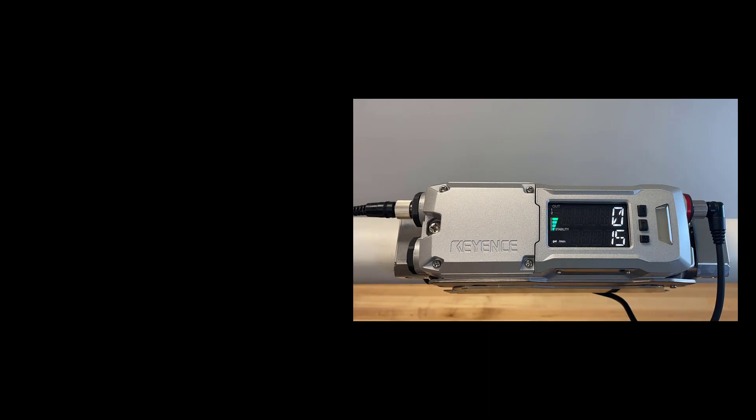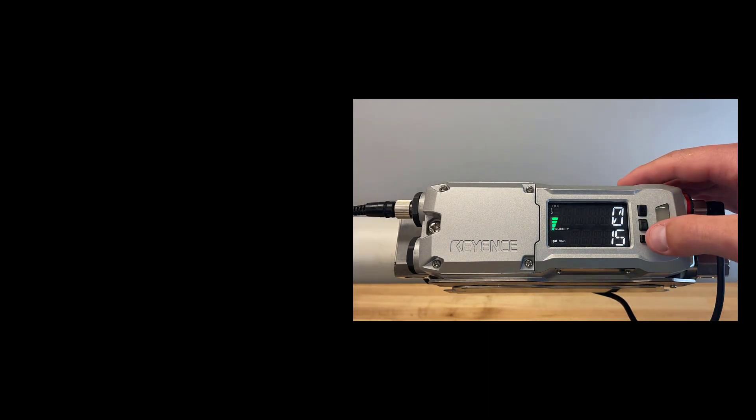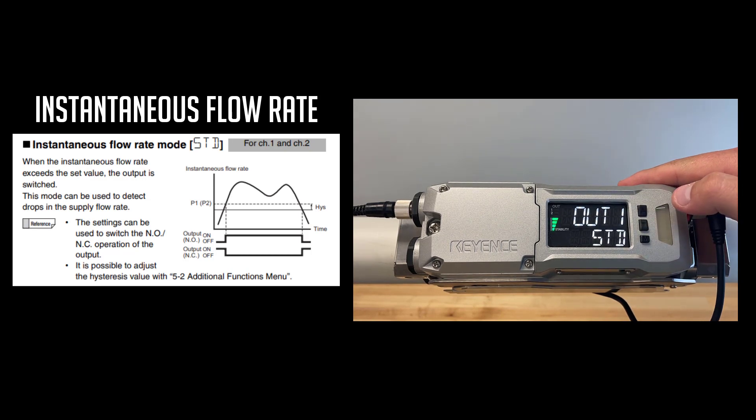To select the function of your channel one or output one wire, hold the mode key to enter the menu structure. By default, we will see STD for standard or instantaneous flow rate. Tap the up arrow to cycle the different menu options.